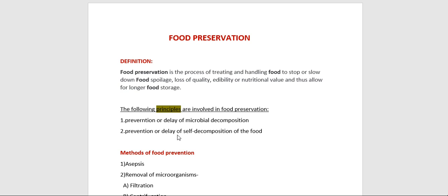The second principle is prevention or delay of self decomposition of foods. The principles involved here are destruction or inactivation of food enzymes — for example, blanching — prevention of oxidation by means of antioxidants, and prevention of damage caused by insects and animals.